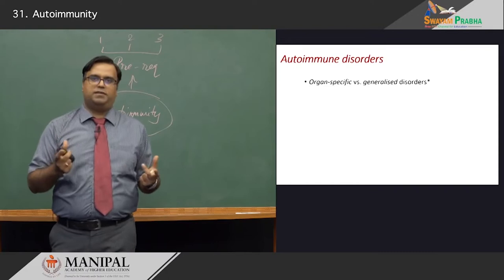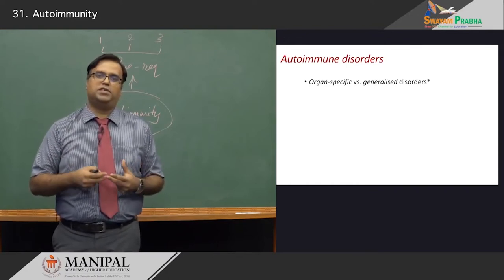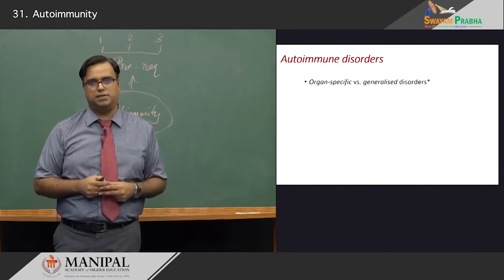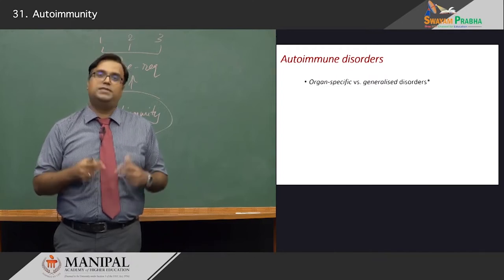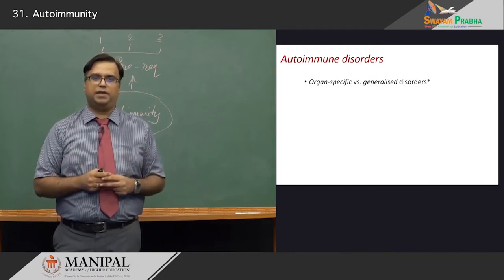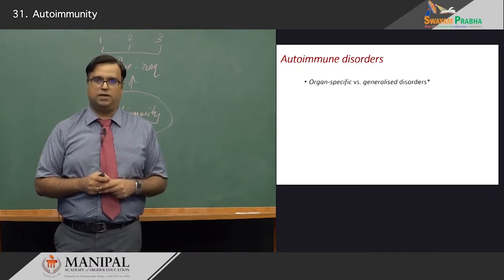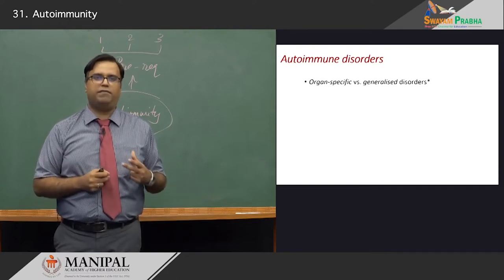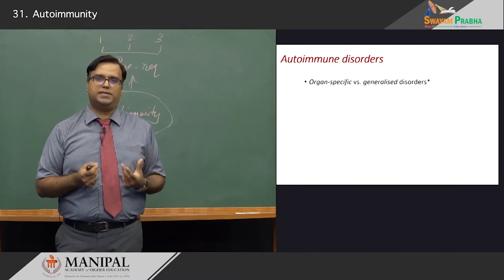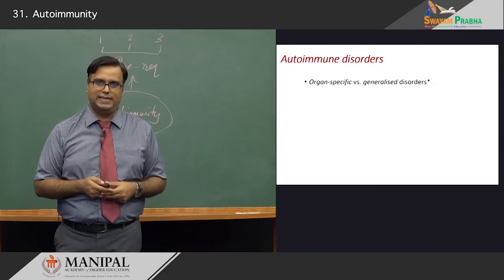Certain disorders on the autoimmune spectrum are organ-specific, such as the thyroid. Some of you may have encountered patients with Hashimoto's thyroiditis or Graves' disease. Type 1 diabetes mellitus — India is the diabetes capital of the world — is also an autoimmune disorder. You may think of multiple sclerosis, or even closer to home, a lot of patients with lupus or systemic lupus erythematosus. As you can see in those examples, some are organ-specific and some are generalised or multisystem, such as SLE.